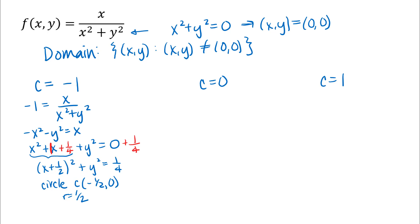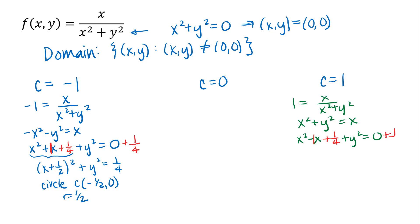For c = 1, I have 1 = x/(x² + y²). Multiplying both sides by x² + y² gives x² + y² = x. Subtracting x and completing the square — taking half of negative one to get -1/2, squaring to get 1/4, adding 1/4 to both sides — gives (x - 1/2)² + y² = 1/4. That is a circle with center at (1/2, 0) and radius 1/2.